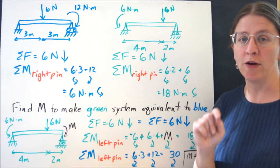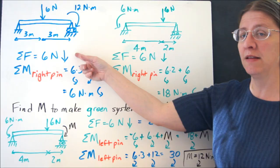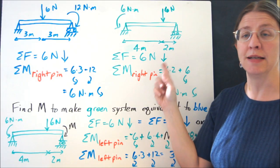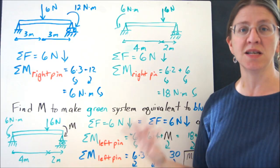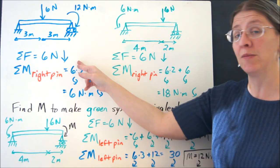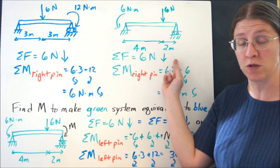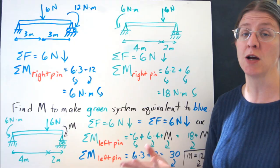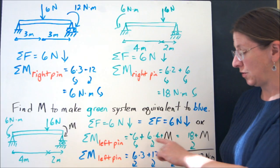Now one thing I do want to make very clear: you see that I say this is 6 newtons down and this is 6 newtons down. It is insufficient to say the sum of the forces is 6, because I have to make sure that I have the same sum of the forces here and the same sum of the forces here. That generally makes more sense to students when I'm talking about forces than when I'm talking about moments. But the moments have to be the same, too.